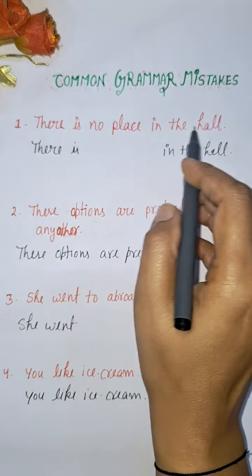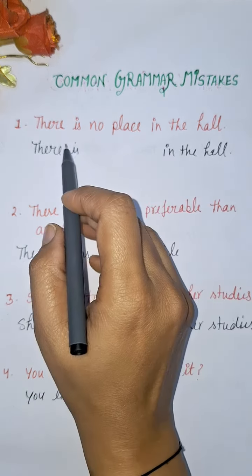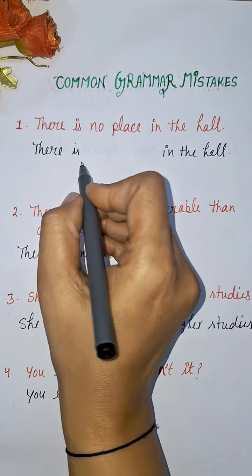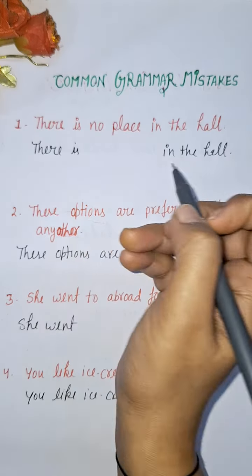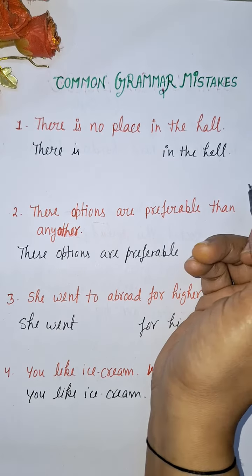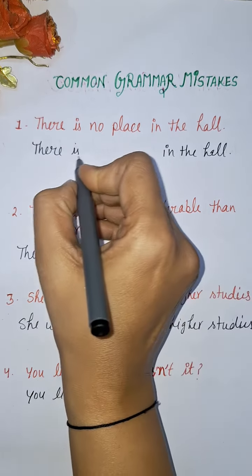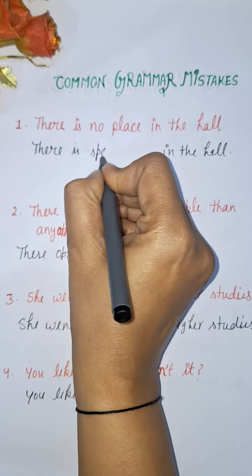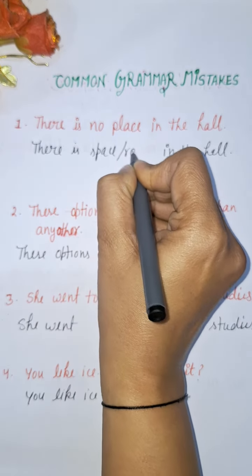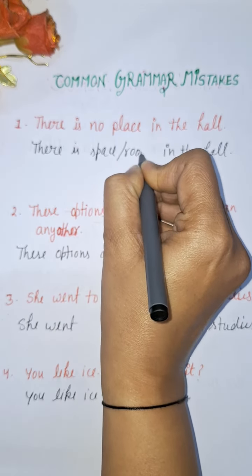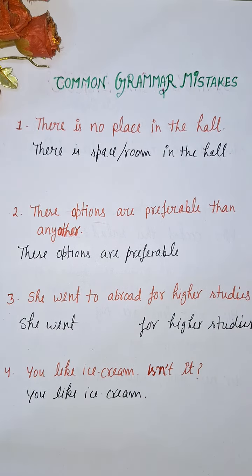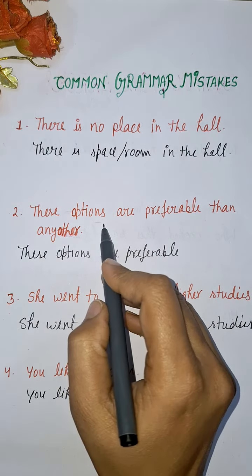First mistake: 'There is no place in the hall.' This is incorrect. It should be 'There is no space or room in the hall.' We use 'space' or 'room' in this context, not 'place.'